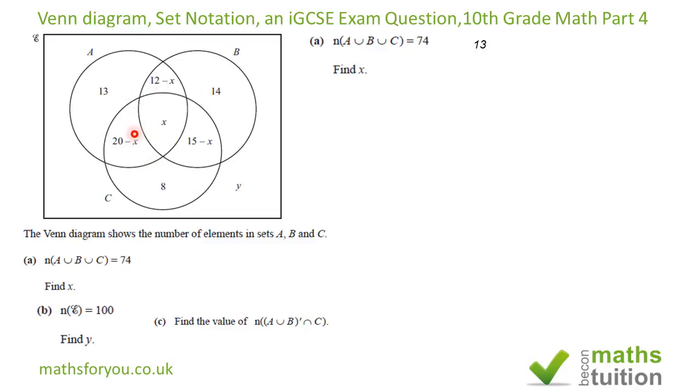That's one, two, three, four, five, six, seven, and then eight. So I've got 13, then I need this region which is 12 minus x. Then I've got this region which is 14. And this one which gives me plus x. And this one which is 20 minus x. Then this region which is 50 minus x. And then this region which is 8.